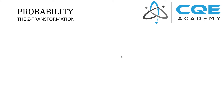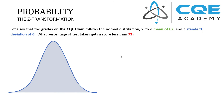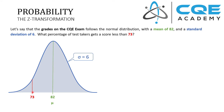I want to show you how to calculate probability using what's called the Z transformation, using a little example. Let's say we're talking about the CQE exam, and we know the data follows the normal distribution with a mean value of 82 and a standard deviation of six. The question is: what percentage of test takers get a score less than 73? The probability associated with the normal distribution is equal to the area under the curve. So when we want to find out the probability of getting a score less than 73, we want to find the area under this curve — that's where we use the Z transformation. Also note that the normal distribution is symmetric around the mean, so half of our data points fall on the left side and half on the right side.